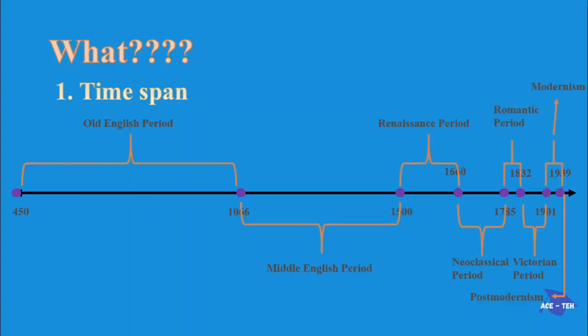We have a timeline here. History of English Literature is divided into these periods, from Old English and moving to Postmodernism. Each period has its own peculiarities, which help us to better understand the works of a particular period.